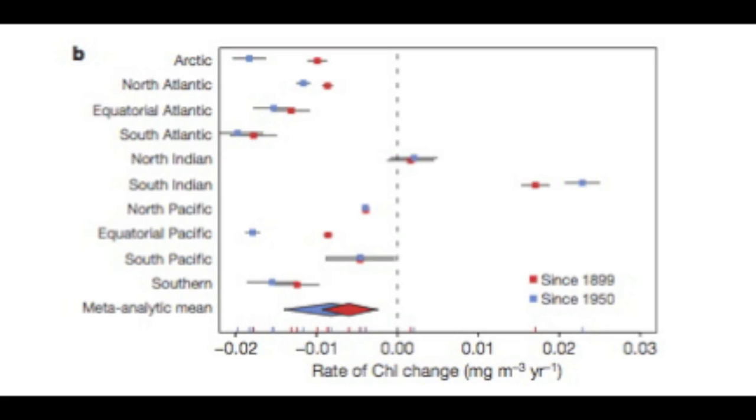Rising sea surface temperatures result in a lower mixed layer. This reduces the nutrients available to the phytoplankton in already stratified tropical waters. However, this same effect benefits phytoplankton at higher latitudes where growth is constrained by light levels and deep mixing.